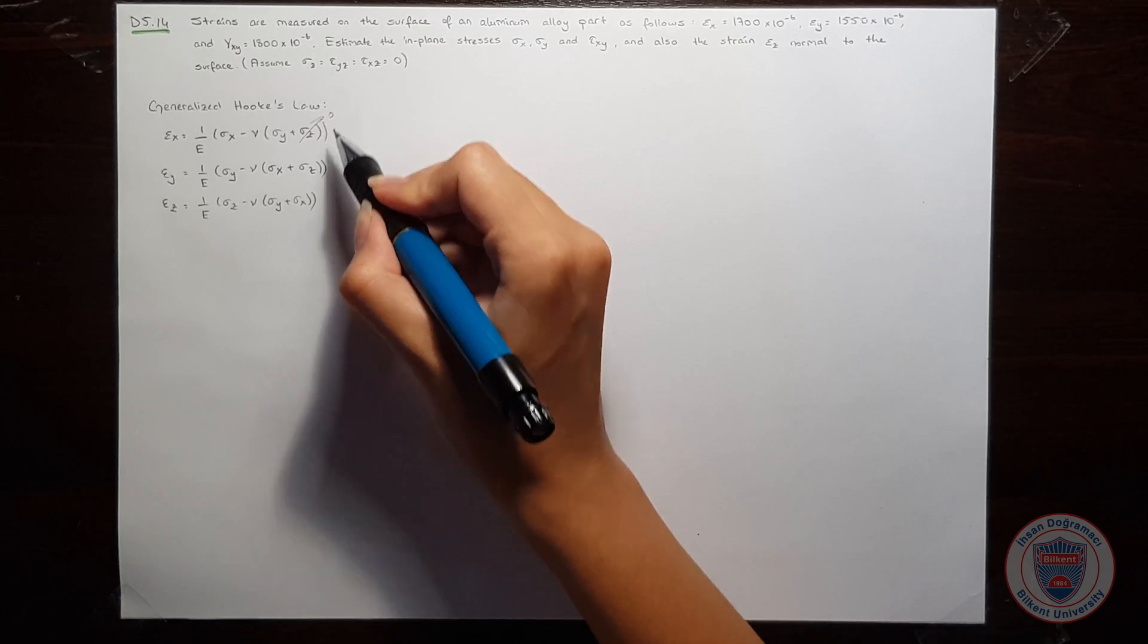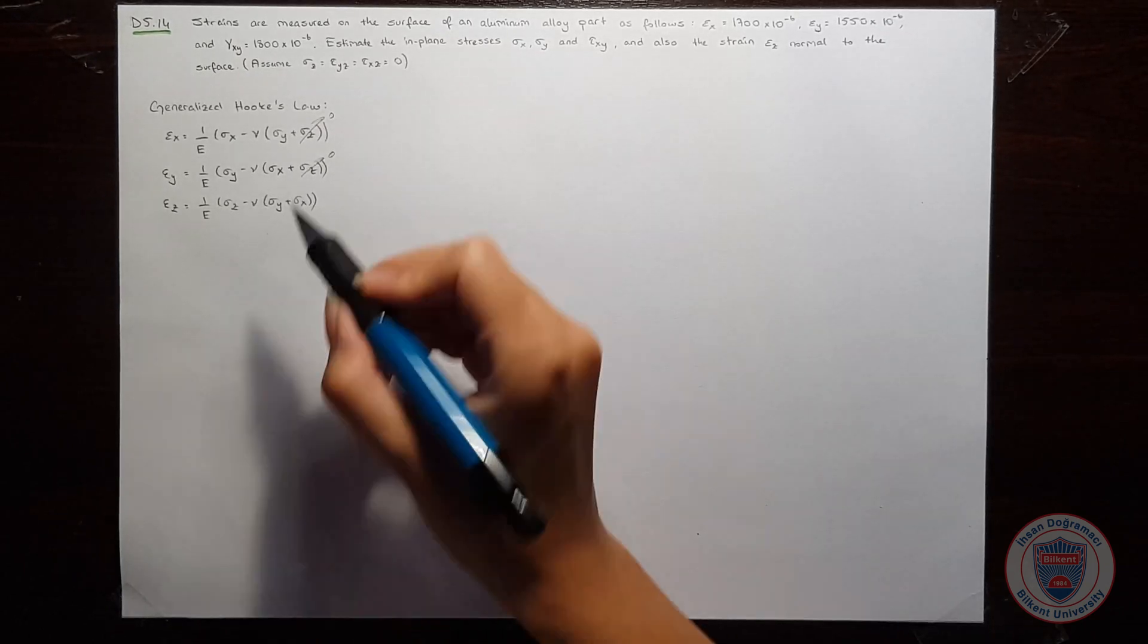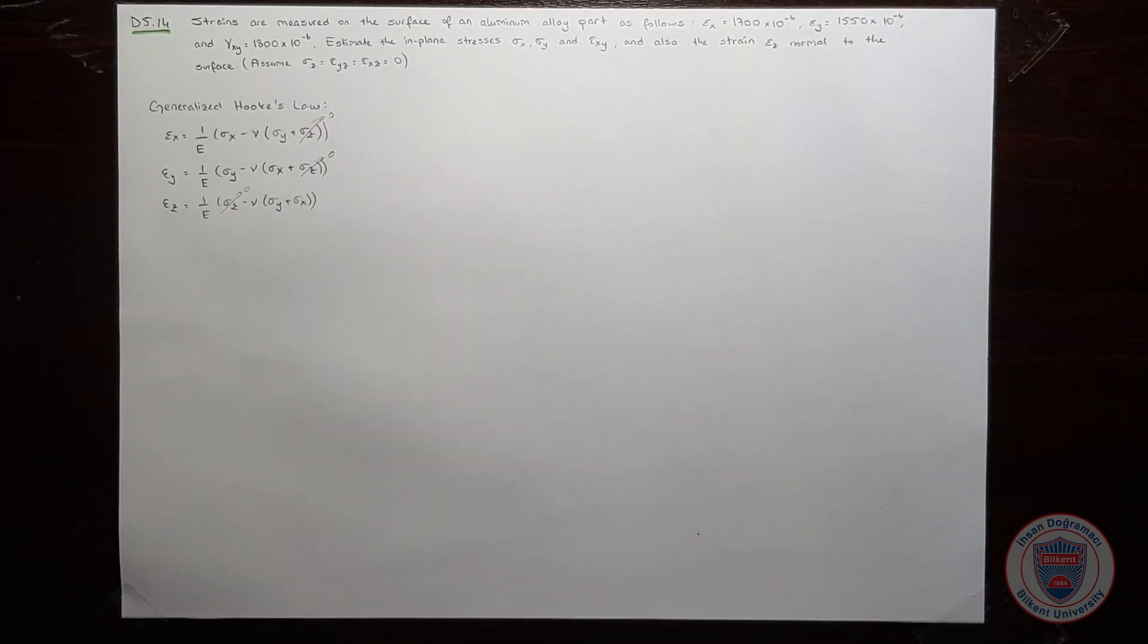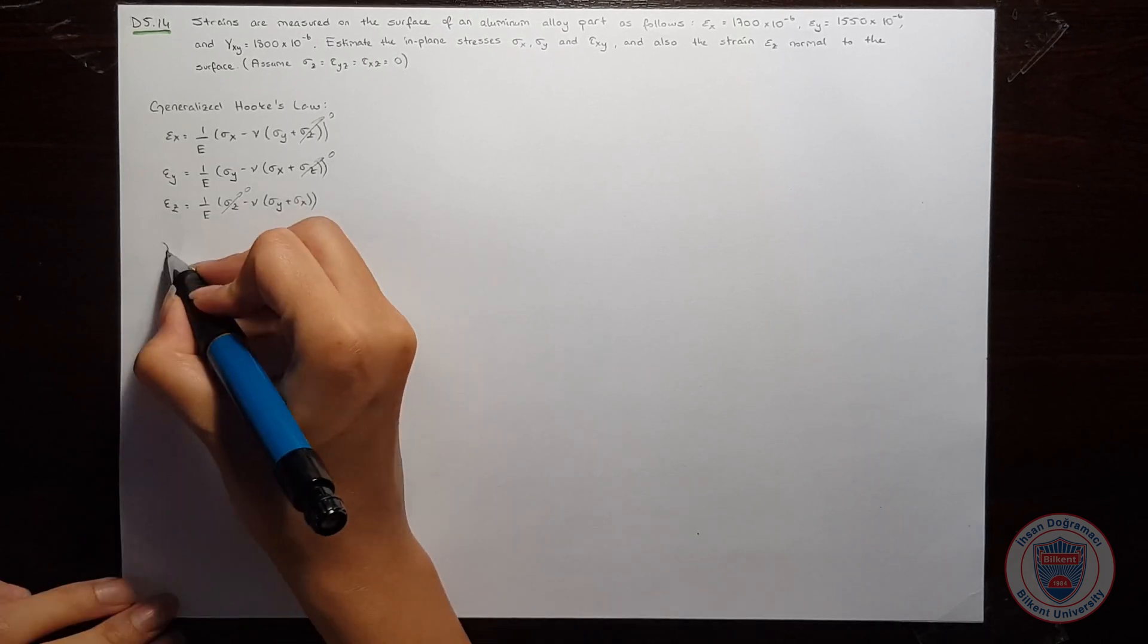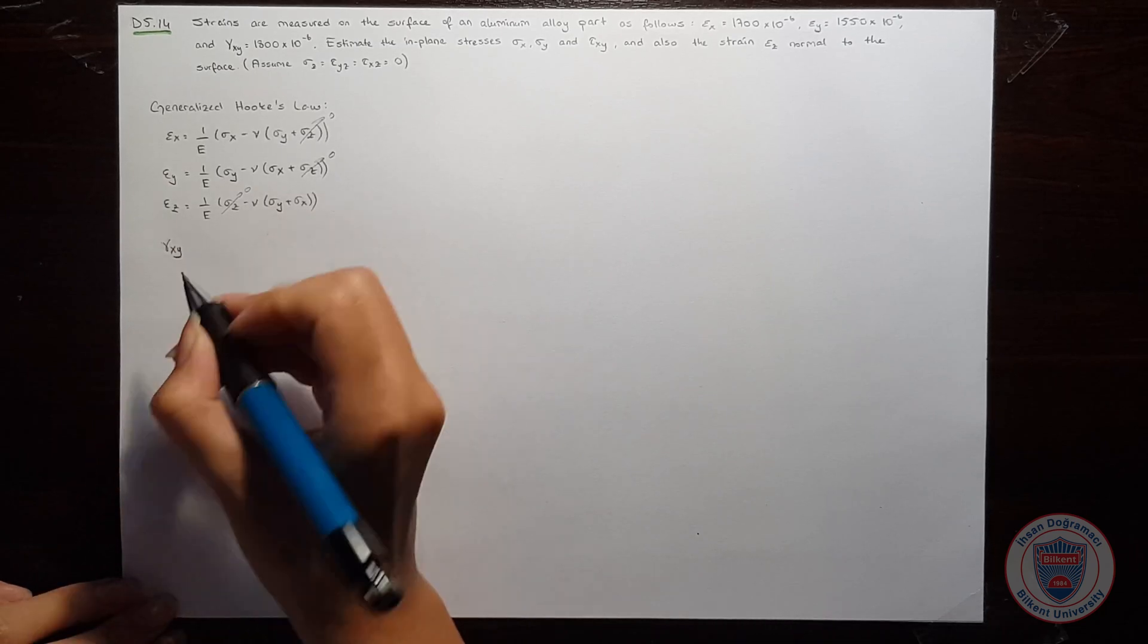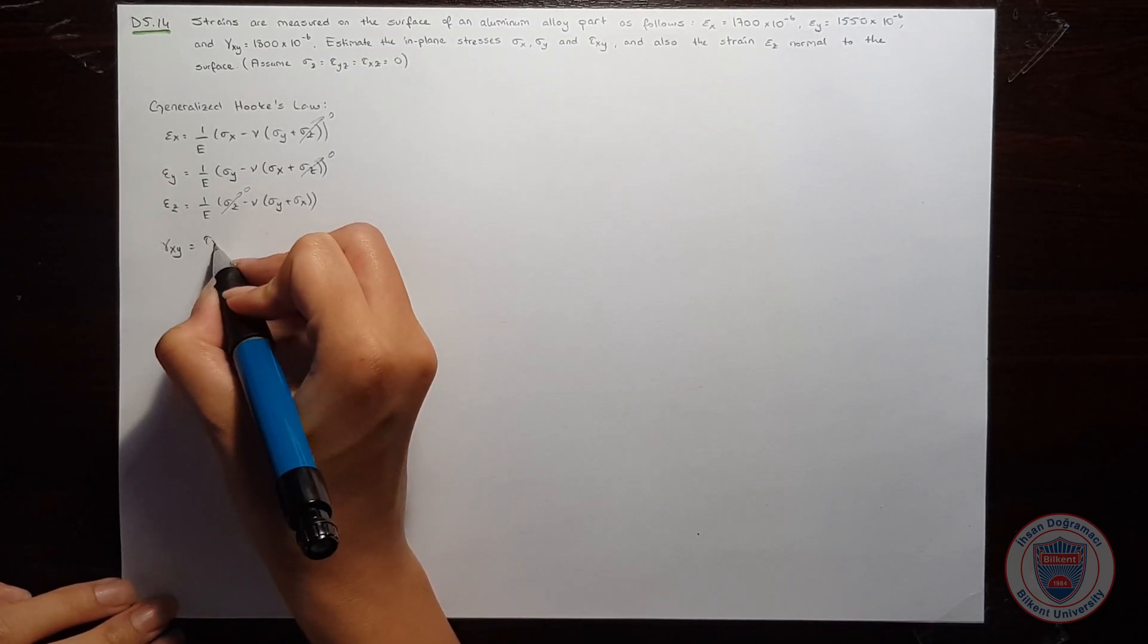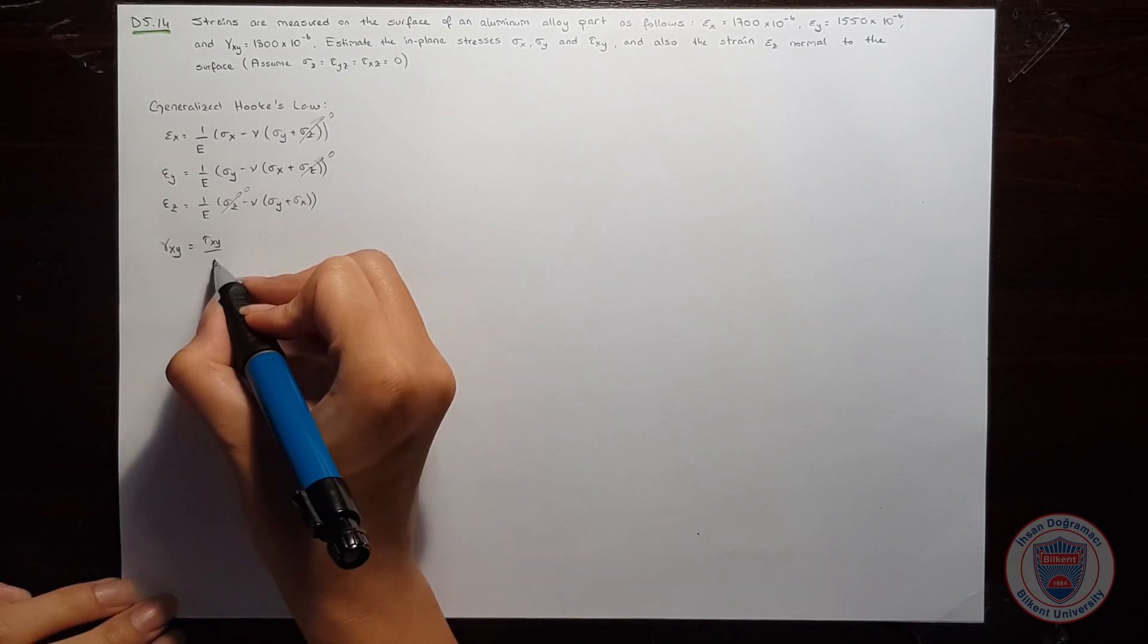We know that sigma z is zero, so we will not include this in these equations. And for the shear stress, we know that gamma xy is equal to tau xy over g.